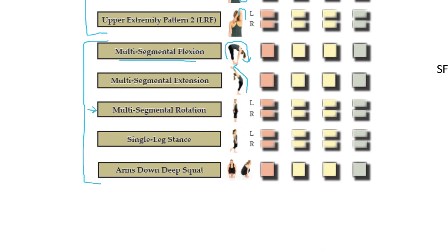Multi-segmental rotation is next: standing with feet together, can they turn all the way to the left and to the right? Balance is assessed after that, and there have been some changes to how this is performed. Finally, the overhead squat was changed in the latest version to an arms-down deep squat, with feet together rather than separated.